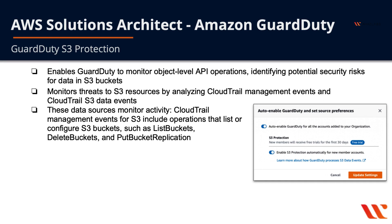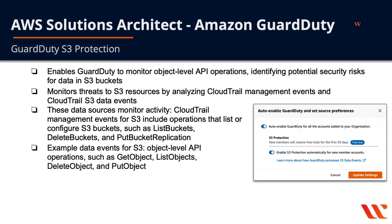GuardDuty monitors for use of those API calls. Example data events for S3 are object-level API operations such as get object, list objects, delete object, and put object. Between CloudTrail management event monitoring for list buckets, delete buckets, and put bucket replication, and the data events for S3 monitoring for get object, list objects, delete object, and put object, you get very nice coverage of your S3 buckets and any malicious activity that might be happening there.